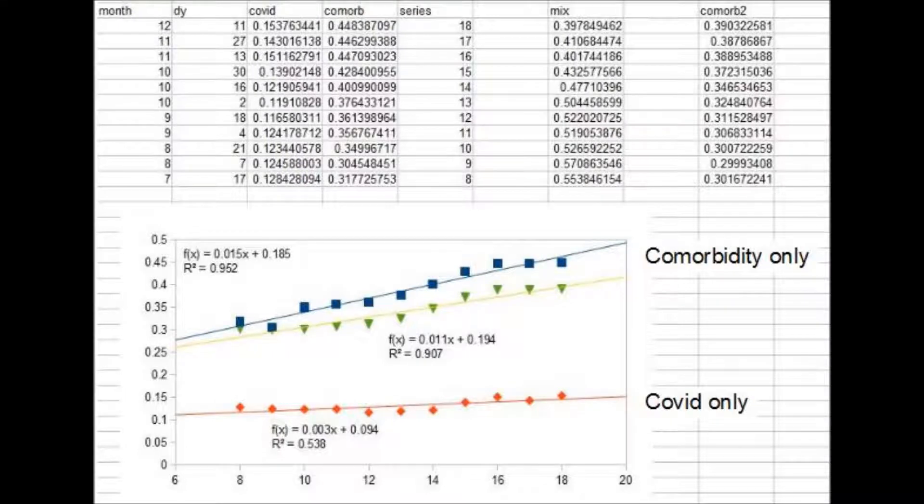Following the calculation methodology laid out previously, the numbers for COVID up to the 11th of December have been analyzed. I calculate that between 39 and 45% of those deaths are comorbidity deaths, and that 14 or 15% are due only to COVID.